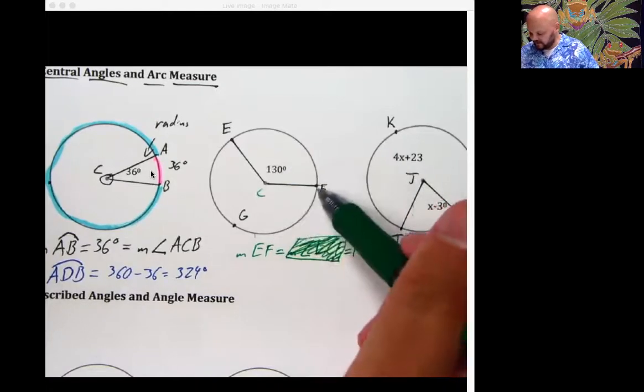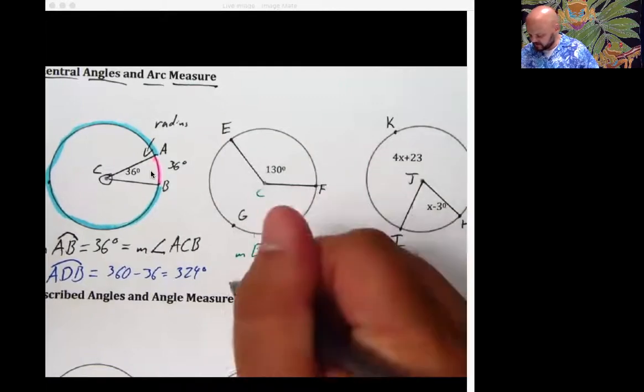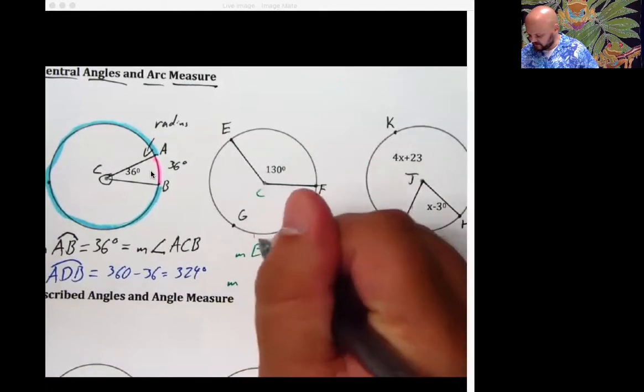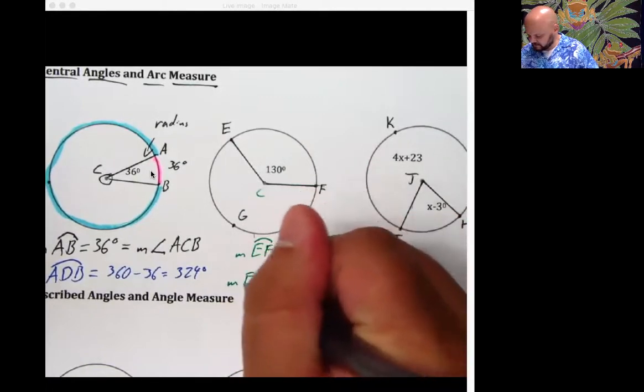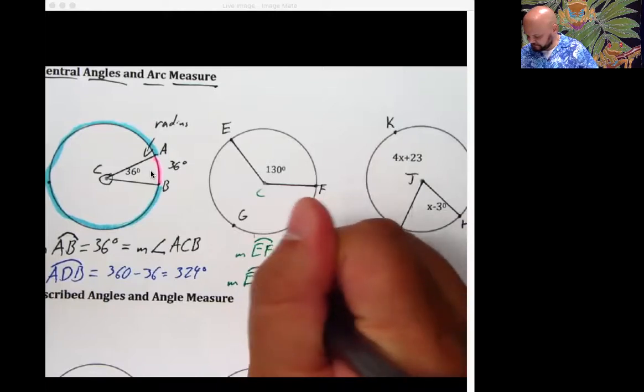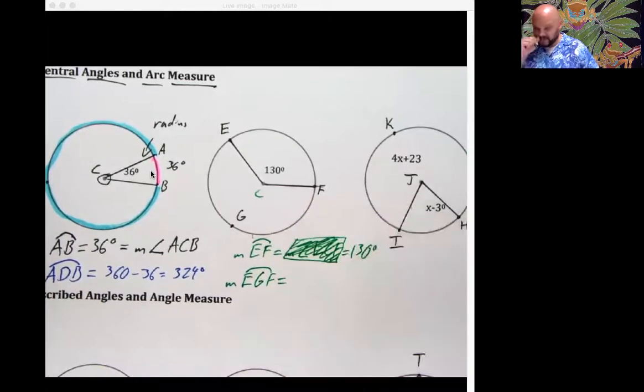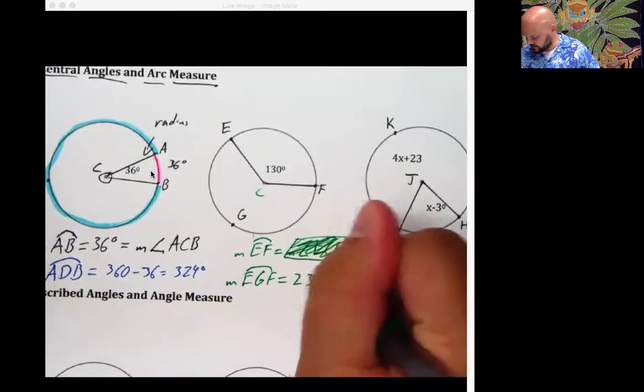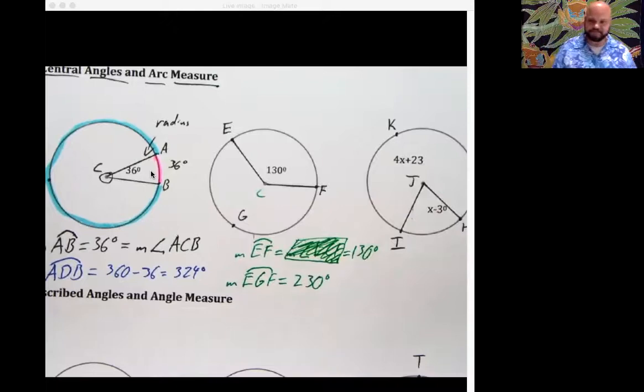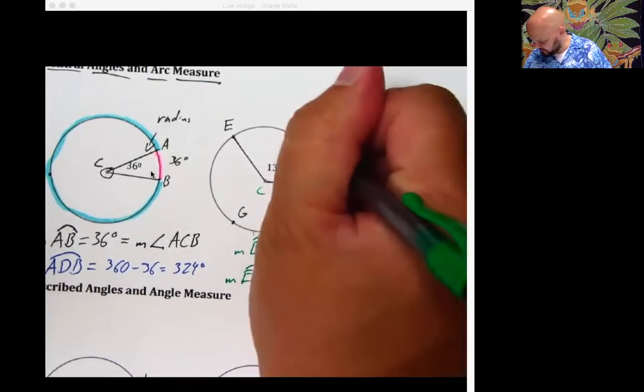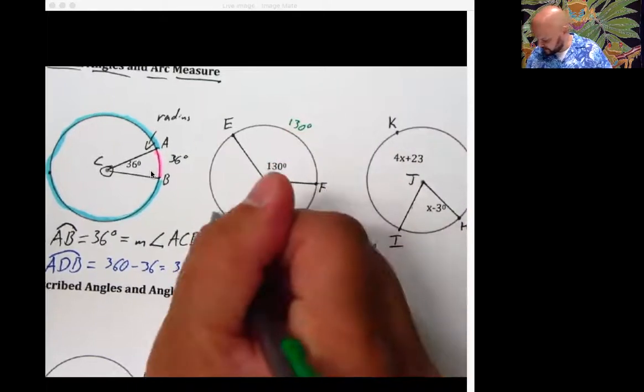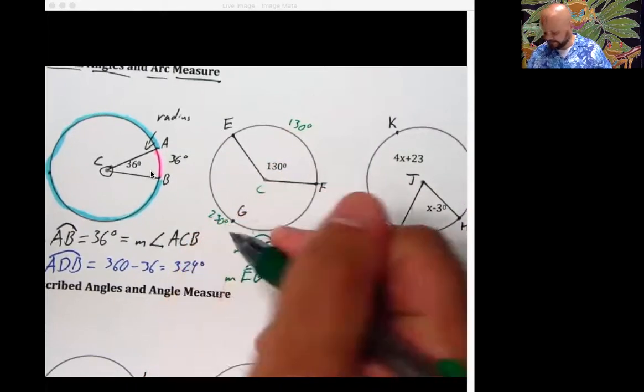Now I want to go find the major arc's measure. So that would be the measure of arc EGF. And that's going to be equal to 360 minus 130, which is 230. There you go. That's all the math that needs to be done. 130. I can put a 130 out here for the arc and I can put a 230 over here for this arc and we're good to go.